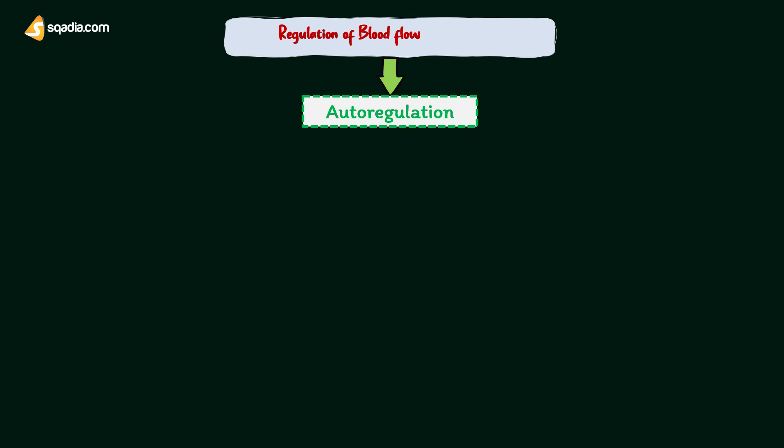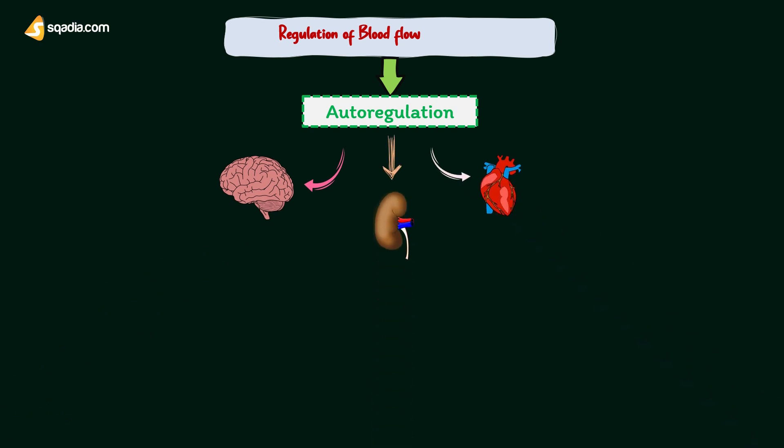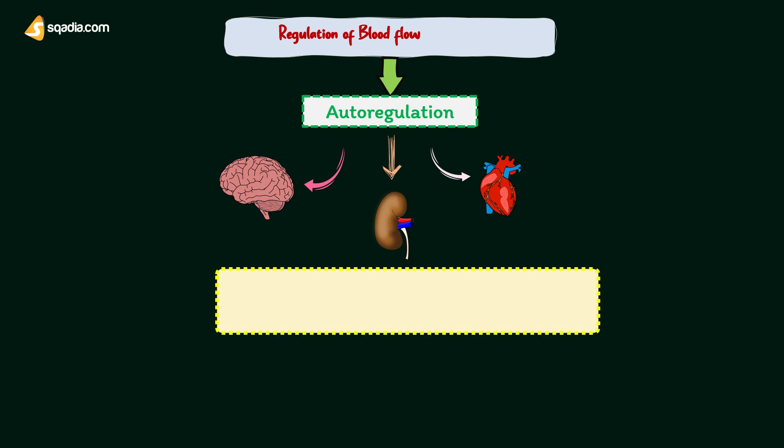Autoregulation is the intrinsic ability of an organ to regulate its own blood flow. It is present in some vital organs such as the brain, heart, and kidneys, and it is highly significant and more efficient in kidneys. Renal autoregulation is important to maintain the glomerular filtration rate.